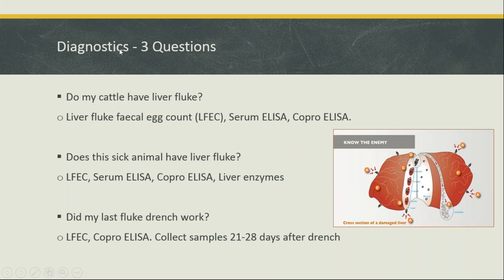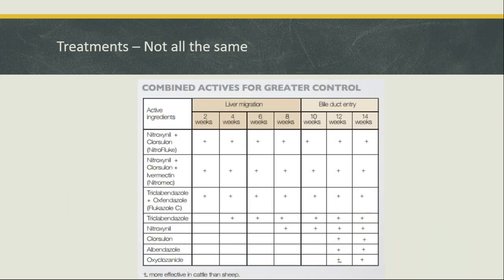For treatments, pretty much the only way to remove adult parasites from the host is drenching. We've been quite spoiled for the last 30 years with some really good drugs, but unfortunately we're starting to see issues. One key thing is that not all drugs are the same. Some of the products down the bottom only kill 12- to 14-week-old fluke — meaning those parasites have been migrating through the liver causing damage for 12 weeks before you knock them out.